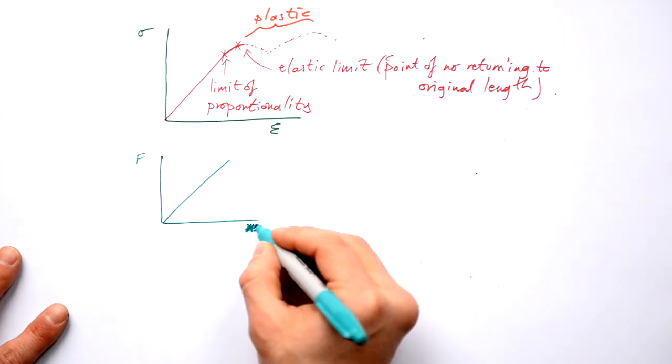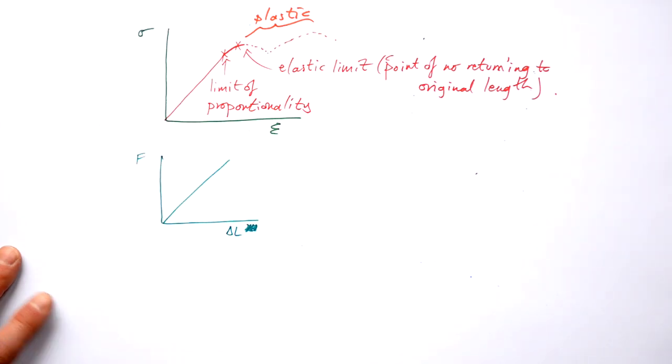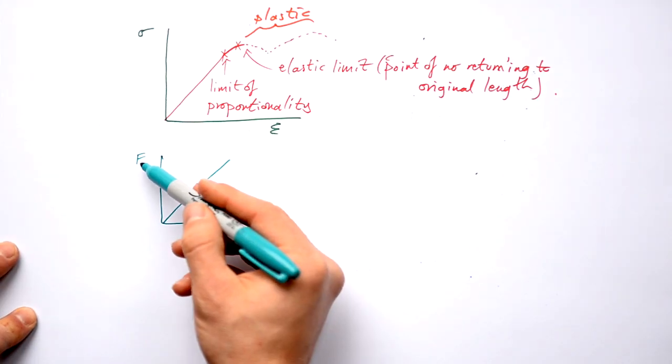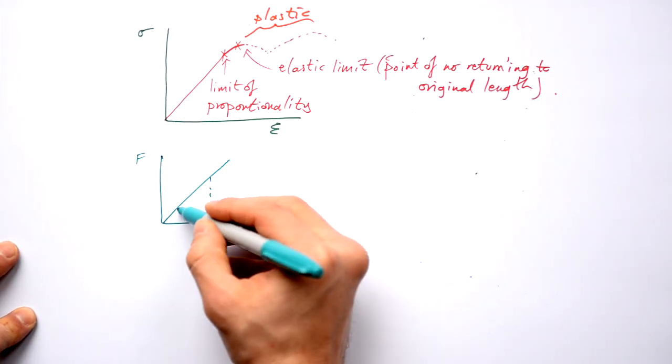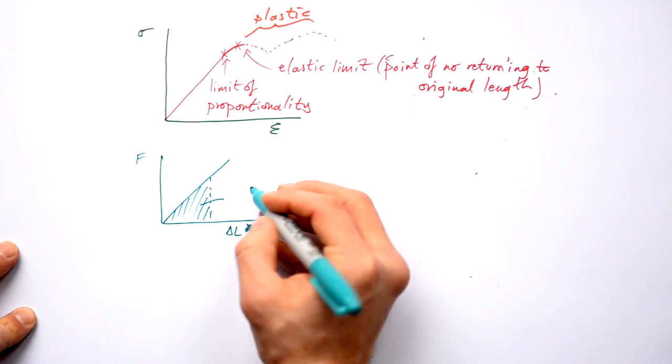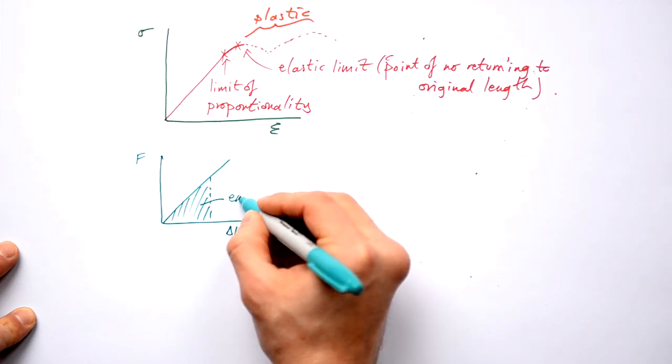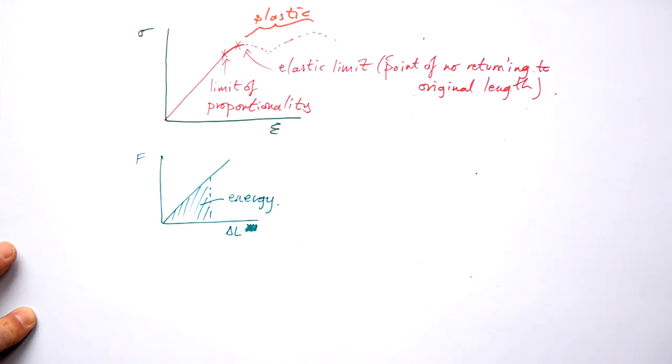Incidentally, very similarly to what happens with a spring, if we've got force against extension, then the area under the graph is going to be the energy stored in the wire.